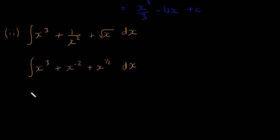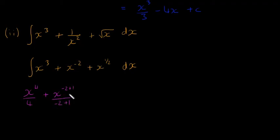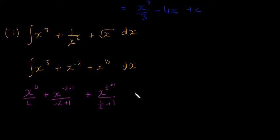I'll change to purple and go ahead and integrate. The first term, x cubed, integrates to x to the power of 4 over 4. For the second term, x to the power of minus 2, I'll write it out slowly: x to the power of minus 2 plus 1 divided by minus 2 plus 1. For the square root term, x to the power of a half, it's going to be x to the power of a half plus 1, divided by a half plus 1, plus c.